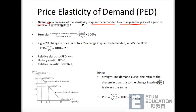比如说这个PED，它有哪些关键词呢？First of all, it's a measure — 测量什么东西？测量sensitivity of quantity demanded，和change in the price of a good or service之间的关系，这样的一个测量工具。大家知道，如果价格产生变化了，对需求肯定是有一定的影响的，那这个影响有多大呢？我们就需要PED来进行测量。